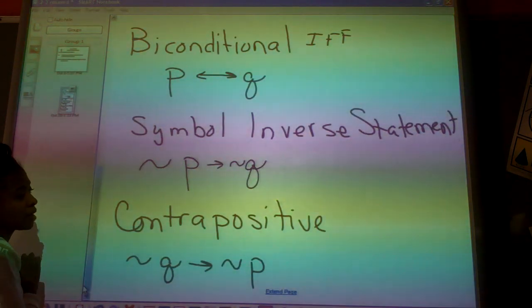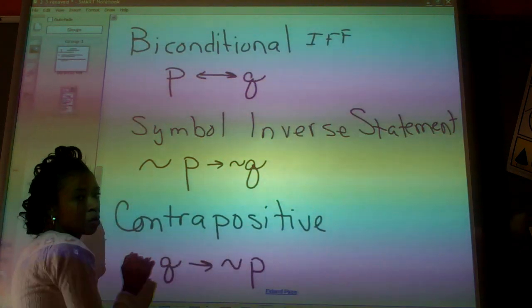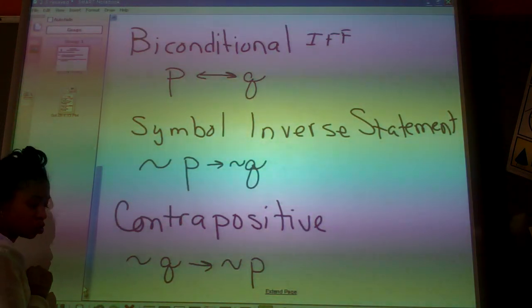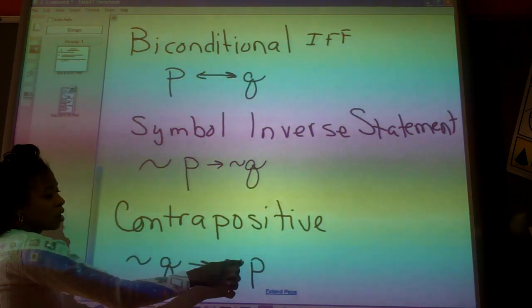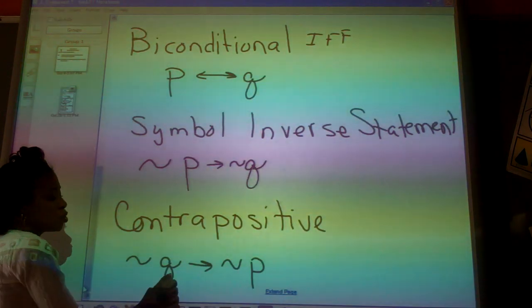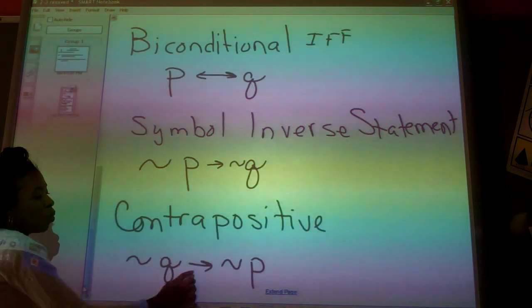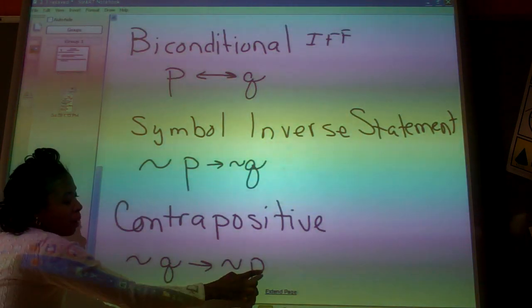And then finally, contrapositive. Contrapositive is going to agree with your conditional statement, your original statement. And squiggly line means not. The squiggly line again means not, but now I have the Q and then the P, which means the conclusion, and then the hypothesis.